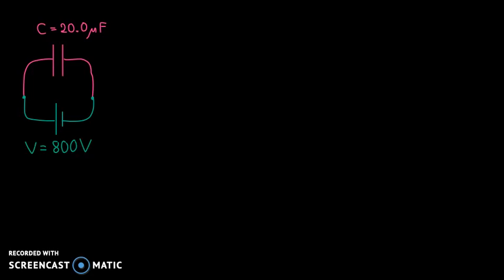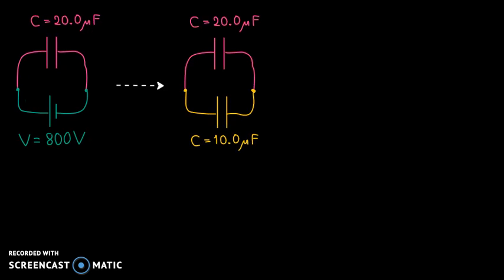We have a 20 microfarad capacitor initially connected to a potential difference of 800 volts and the capacitor is charged. After the capacitor is fully charged, we disconnected it from the source of potential difference and reconnected it to another capacitor of 10 microfarad. The 10 microfarad capacitor is initially uncharged.